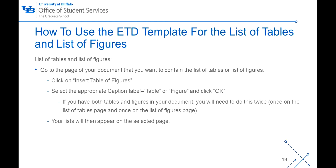To add the list of tables and/or list of figures, go to the page of your document that you want to contain the list. Under the References tab, click on Insert Table of Figures. Select the appropriate caption — table or figure — and click OK. If you have both tables and figures in your document, you will need to do this twice, once for each list. Your list should then appear on the selected page. Be sure to update each of the lists if you make any changes to your document to ensure the page numbers listed are correct.